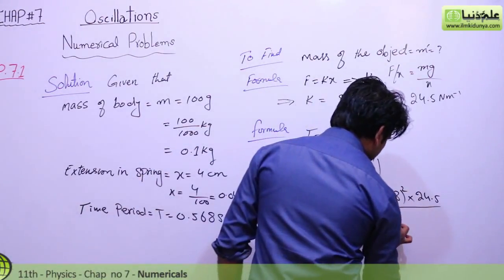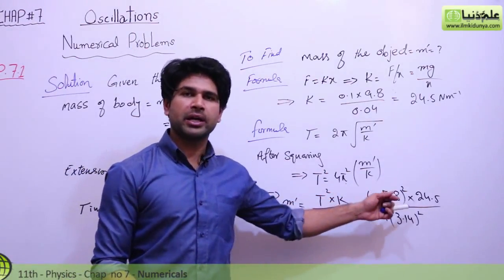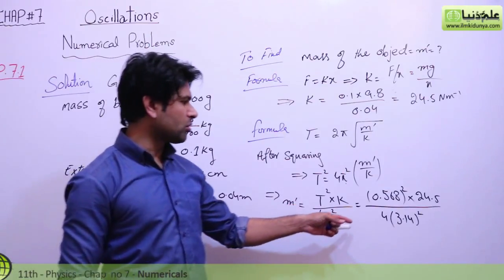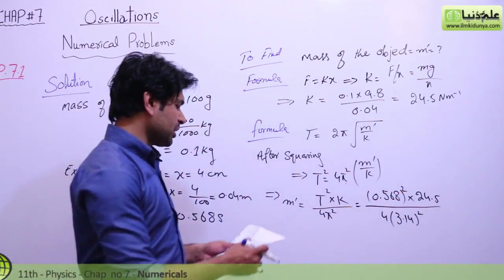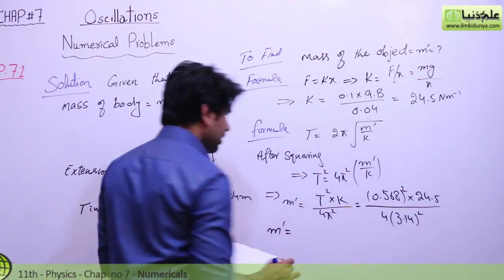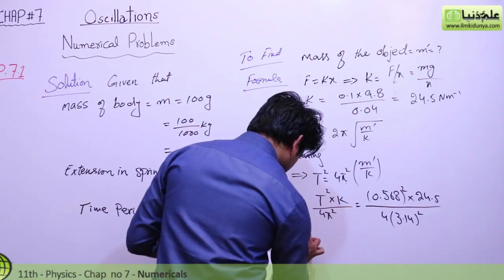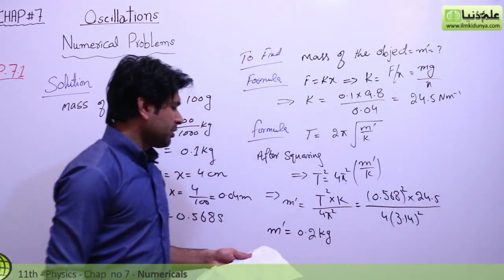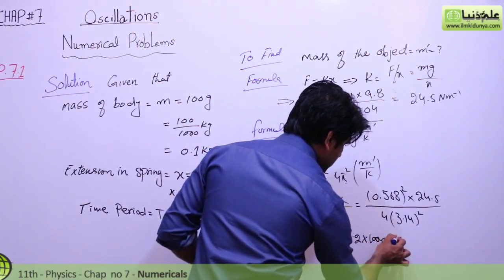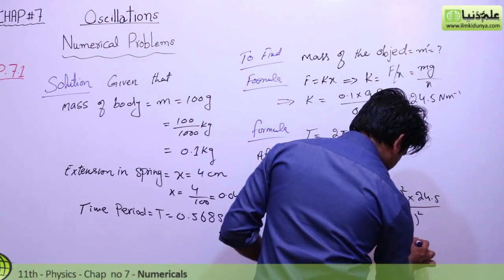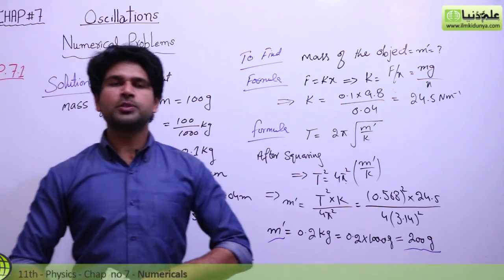4π is a constant — 4 into 3.14, taken to the square. When we multiply T squared with k (24.5) and divide by 4π squared, we get the mass of the body pulling the spring as 0.2 kg. Multiplying by 1000 gives 200 gram. This is the required answer — 200 gram is the mass of the body pulling the spring. Thanks to all of you, see you next time.